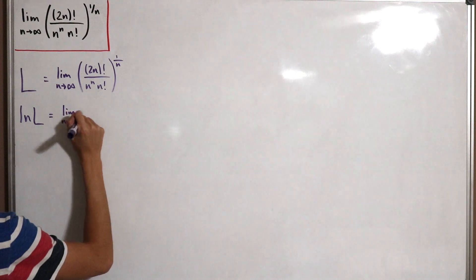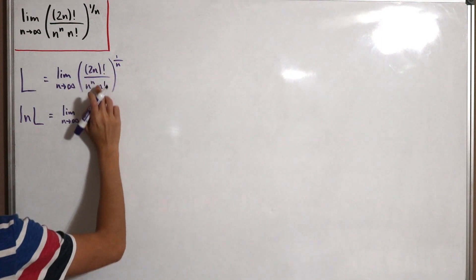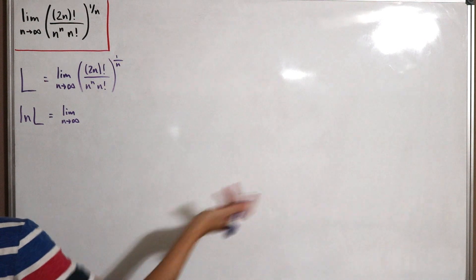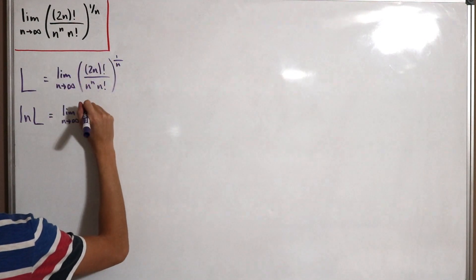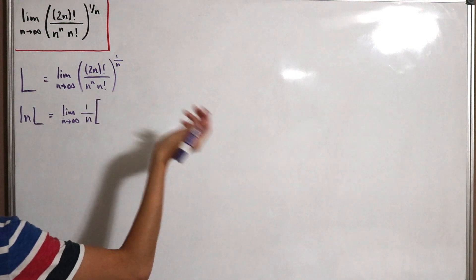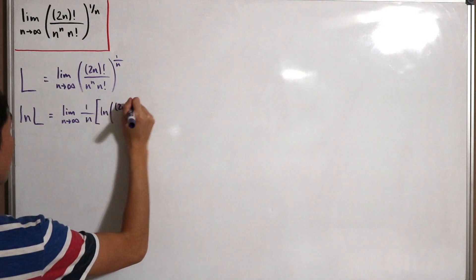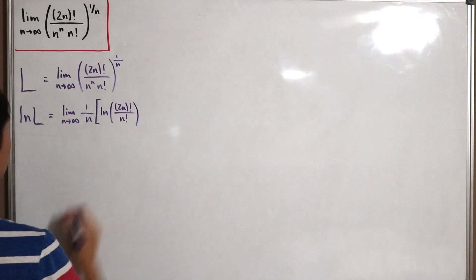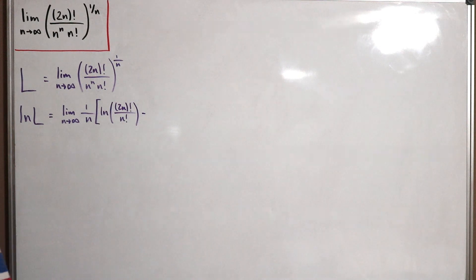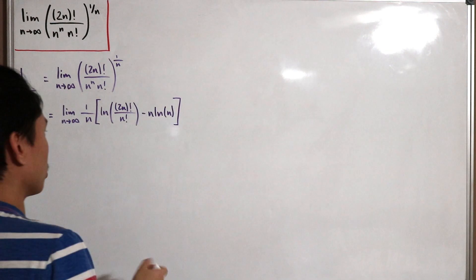Using properties of natural logs: since we have a division, this becomes a subtraction of natural logs. The power of 1 over n moves to the front as a coefficient. For the factorial terms I'll keep them as ln(2n!/n!), and for n to the power n, since the exponent is n, that moves to the front giving n times ln(n). So we have (1/n) times [ln(2n!/n!) minus n·ln(n)].